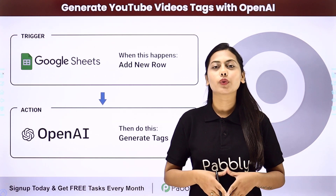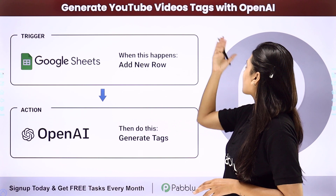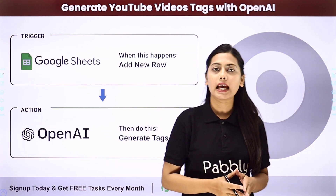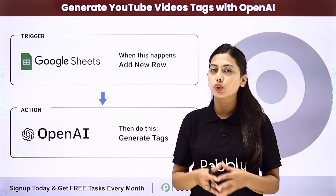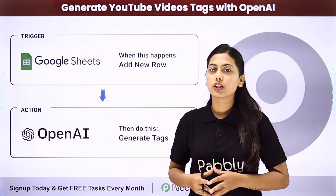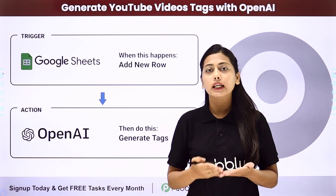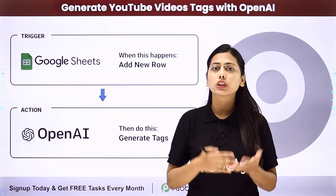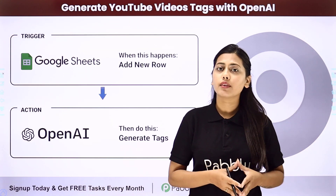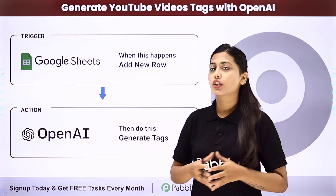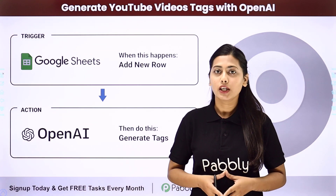Hello everyone. In this video we will learn how to generate YouTube video tags with OpenAI. Whenever you have some videos for uploading on YouTube, you collect all the data related to it in a Google Sheet, like the picture, the link, the video, the description, and also the title of that video. Then we are going to use OpenAI to generate tags specifically for that specific video.